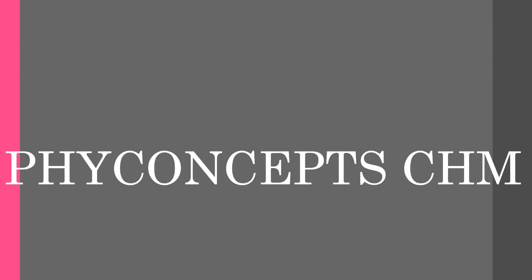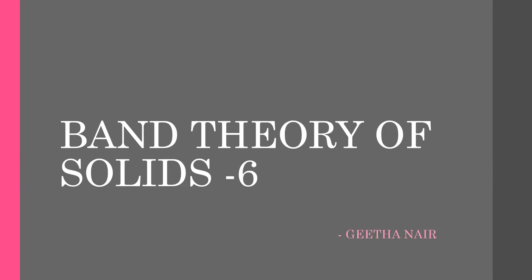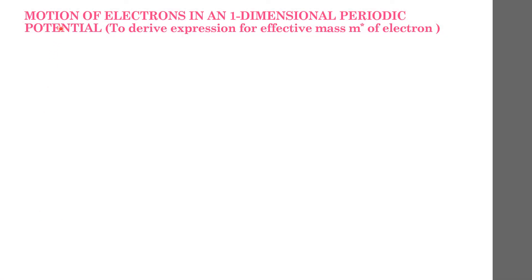Welcome to my channel phi concepts CHM. This is the sixth part of the band theory of solids, where we are going to discuss the motion of electrons in a one-dimensional periodic potential. We will derive the expression for effective mass m star of the electron.